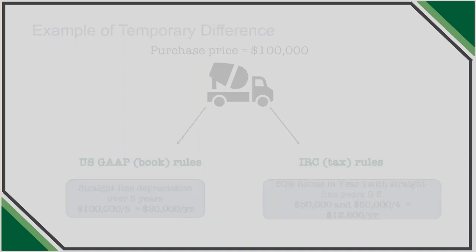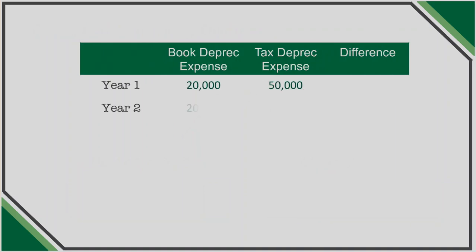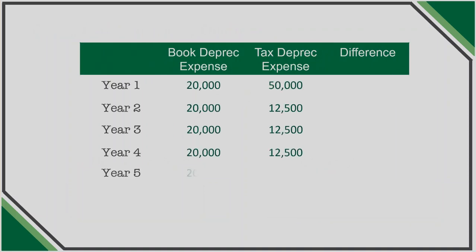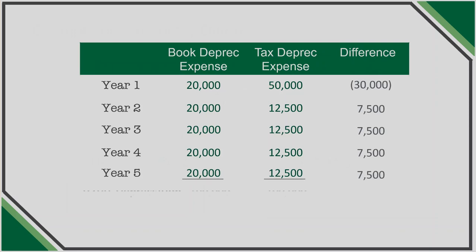If we compare the depreciation methods year by year and overall across the five years, we see that total depreciation at the end of the day is $100,000 for books and $100,000 for tax. The year-by-year variances even out over the life of the asset, thus making the differences temporary in nature.